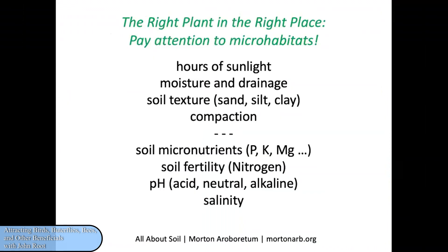Once you've decided which plants you want to establish on your property, think about where the best places would be. These are called microhabitats because different places on your property may have different conditions. The hours of sunlight may differ, as may moisture, drainage, and soil texture. Compaction is something to be aware of — no plant can grow in severely compacted soil. Avoid the temptation to get into a garden and tromp around when it's damp, because that will compact the soil. Stay off your gardens if possible. Soil micronutrients, soil fertility, pH, and salinity can all be determined by a soil test. You can send a soil sample to the UMass soil testing laboratory in Amherst.